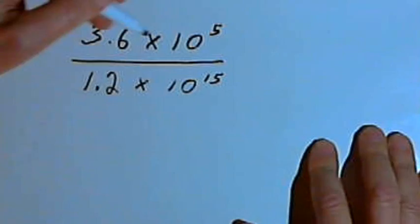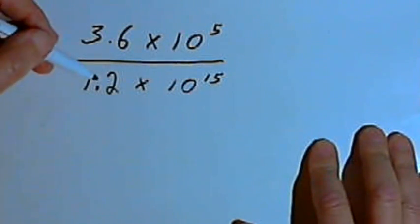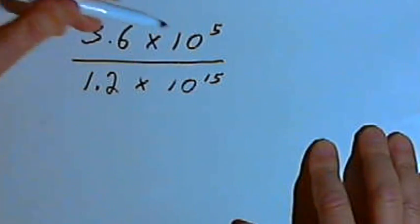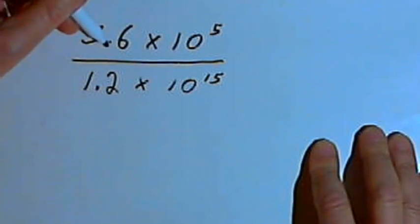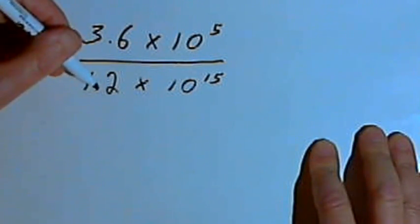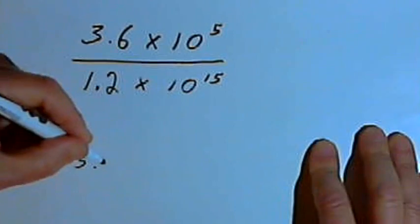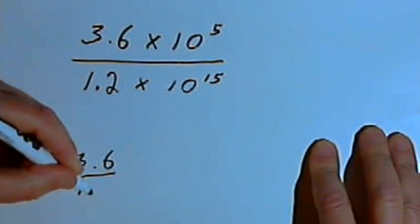I've got 3.6 times 10 to the 5th, and I'm dividing that by 1.2 times 10 to the 15th. So what I'm going to do is first divide the 3.6 by the 1.2. So let's do that over here.